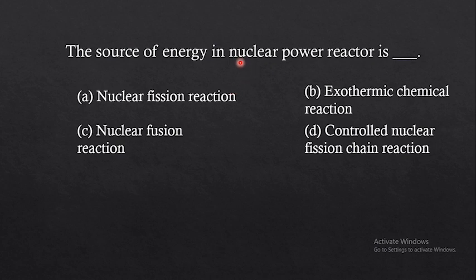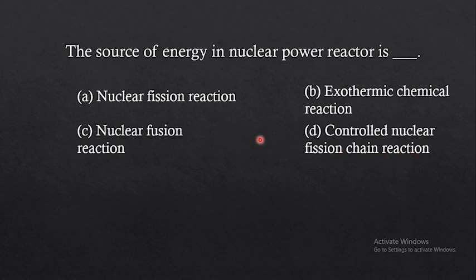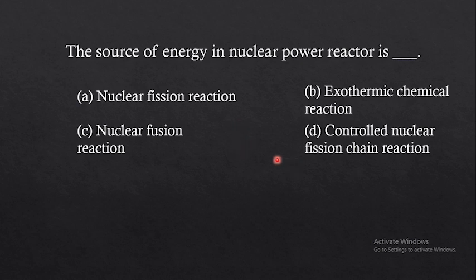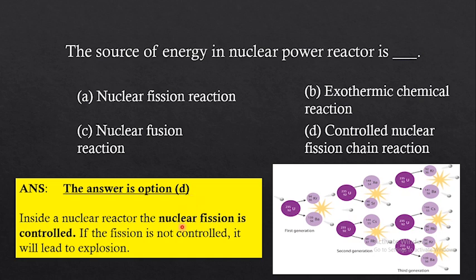The next question: the source of energy in a nuclear power reactor is — options are nuclear fission reaction, exothermic chemical reaction, nuclear fusion reaction, or controlled nuclear fission chain reaction. The correct answer is option D — controlled nuclear fission chain reaction.